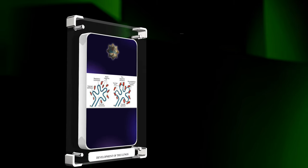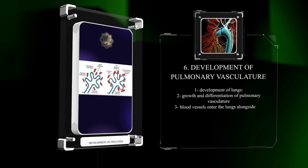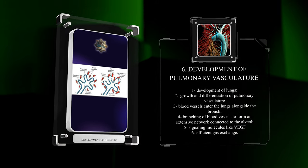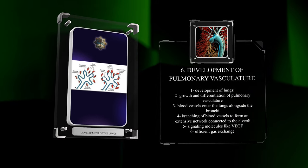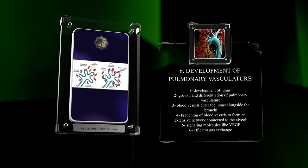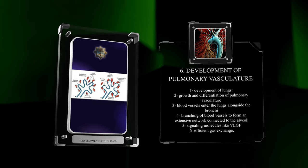The development of the lungs involves the simultaneous growth and differentiation of the pulmonary vasculature. Blood vessels enter the lungs alongside the bronchi, branching to form an extensive network connected to the alveoli. Signaling molecules like VEGF guide this process for efficient gas exchange.